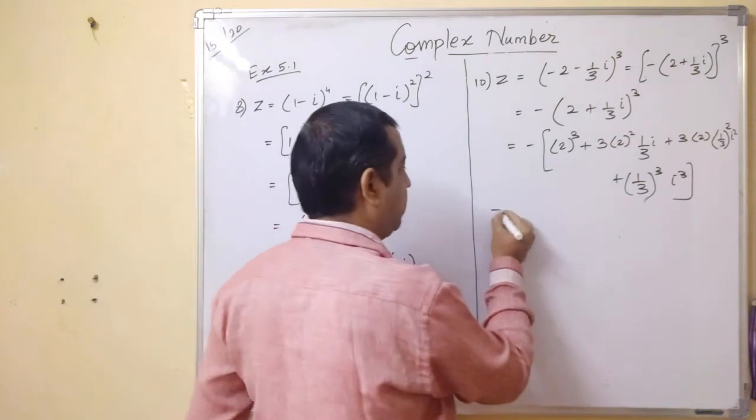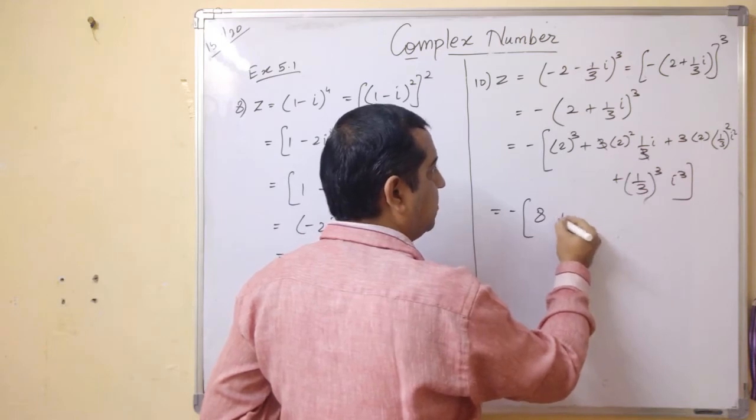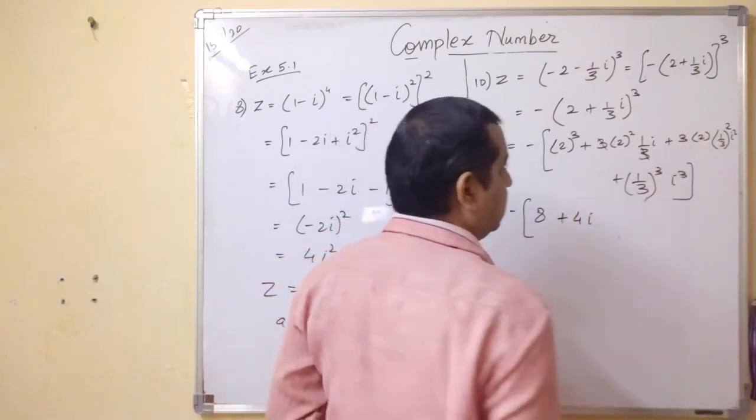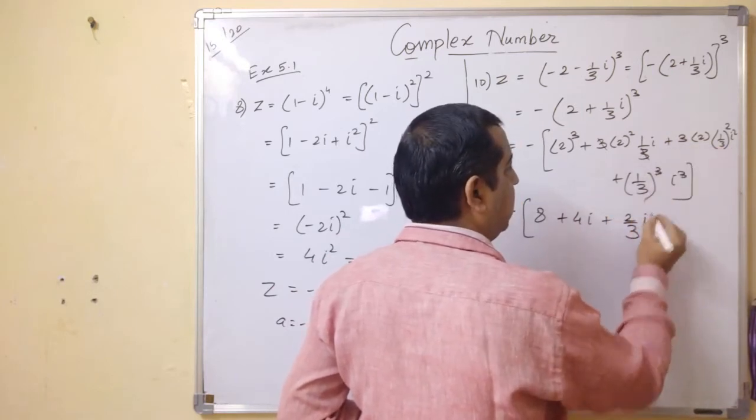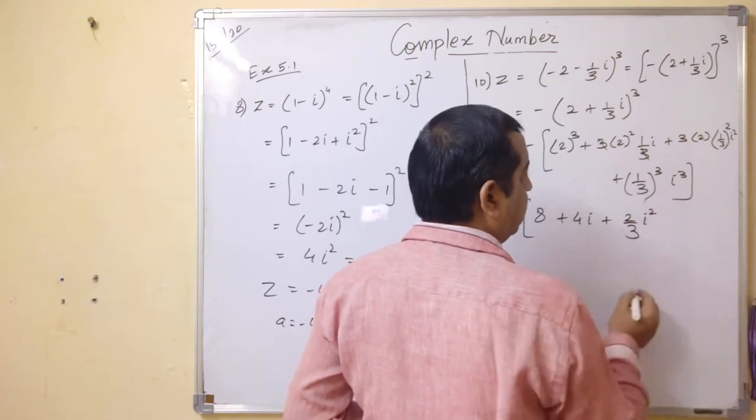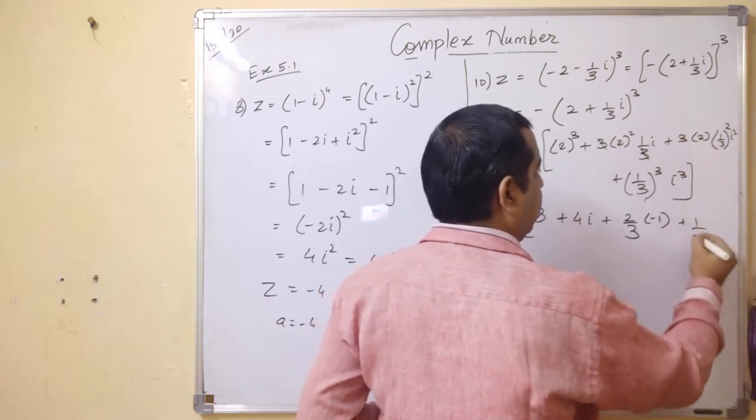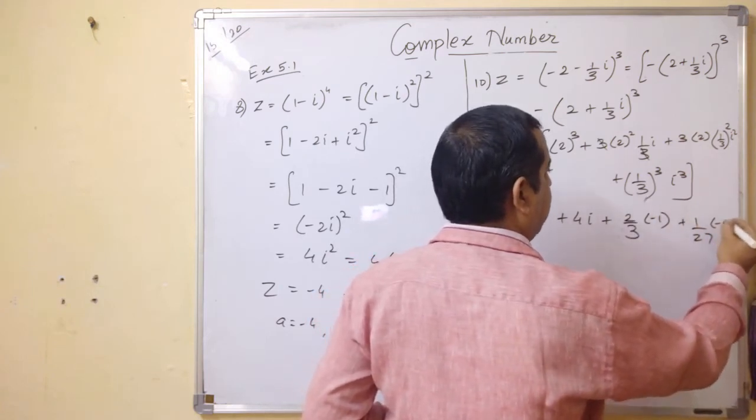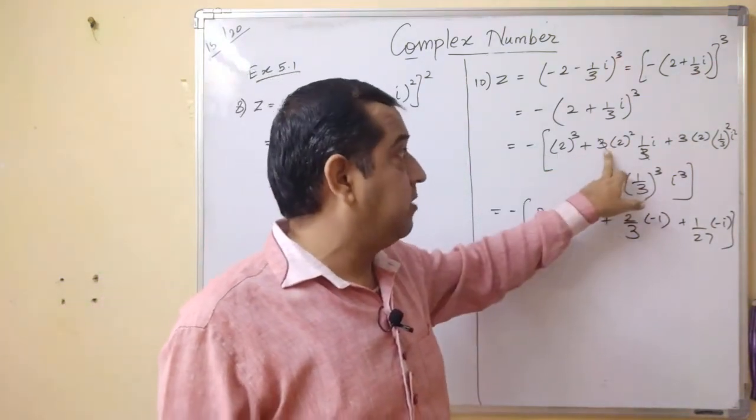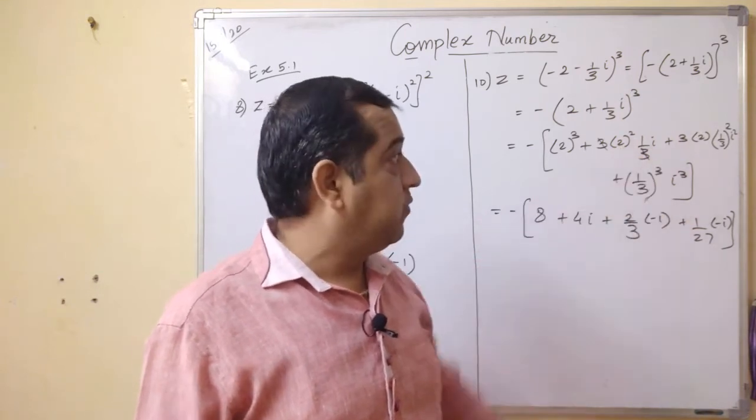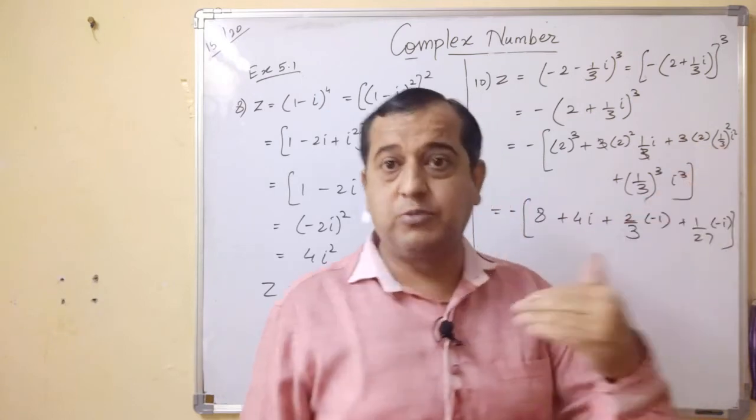Minus is common for all. This will be 2 cube which is 8. This 3 and 3 get cancelled. You get plus 4i. This...